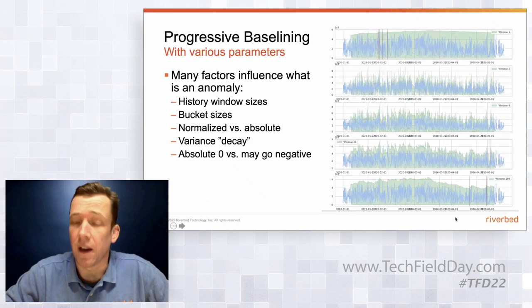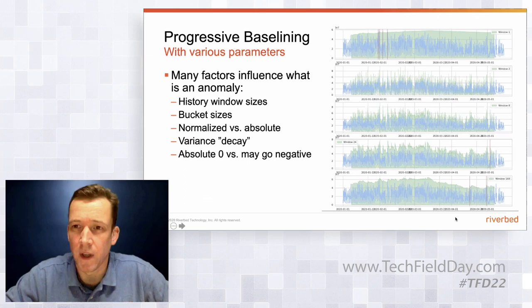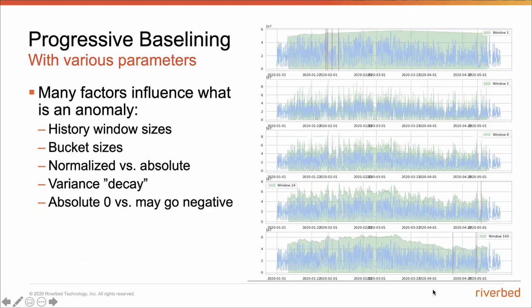Except it's not obvious, because every network is different and every distribution of data is different. On the right-hand side, I've taken that exact same anomaly detection algorithm and changed the window sizes, the bucket sizes, moved between normalized and absolute, and changed what we call variance decay — how quickly we converge back to an expected mean after variance in the data starts to change. Depending on how you configure your anomaly detection algorithms, you'll get a lot of anomalies or very few, and it's really hard to configure in the lab to work well in the field.